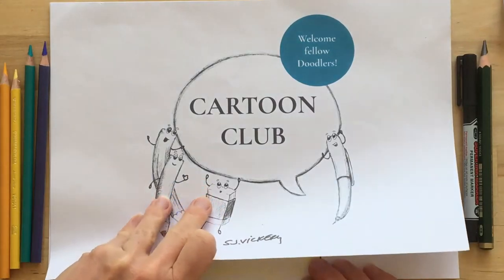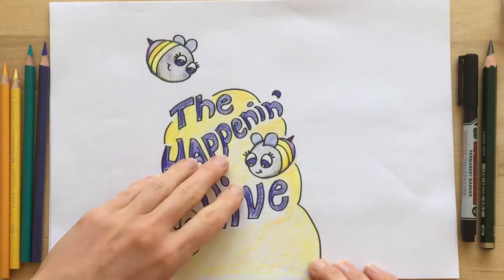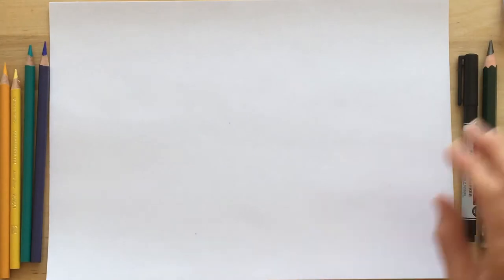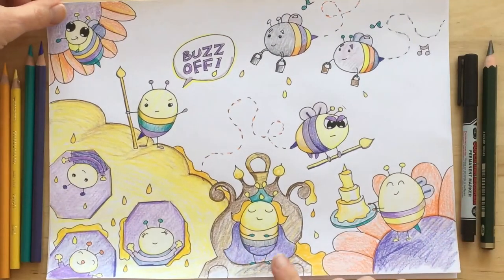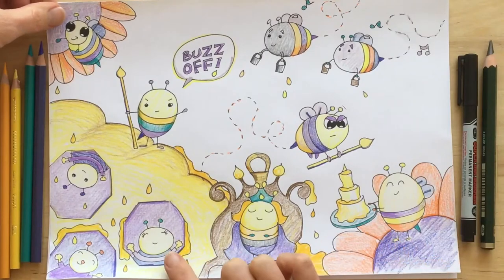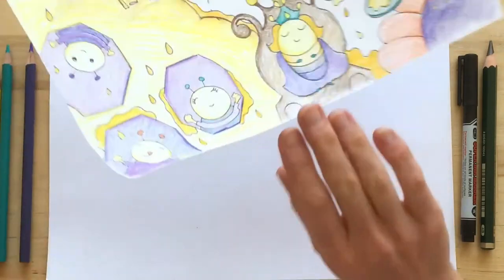This week at Cartoon Club we did the Happening Hive. So here I'll show you one of the hives that I created. We've got our queen and our larvae and our little guards. I thought it'd be fun if I showed you how I draw some bees.